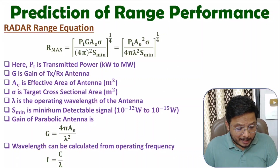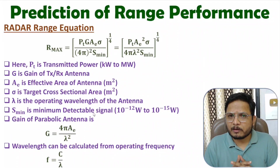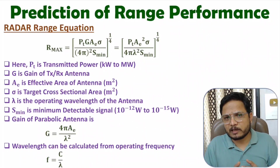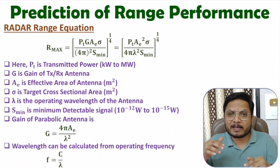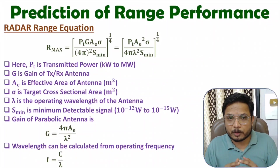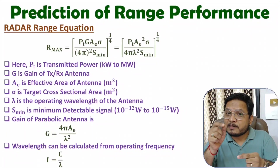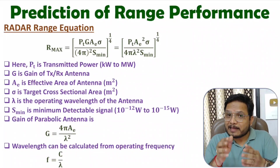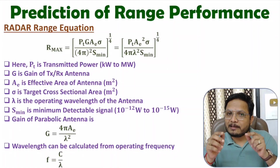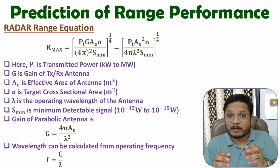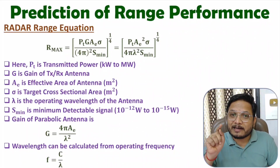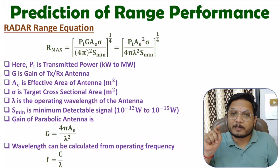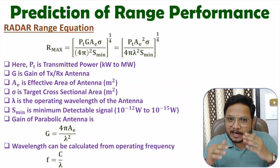Lambda is the operating wavelength and S_min is the minimum detectable signal. With a radar system, we receive a very weak echo signal — in the range of 10⁻¹² volts to 10⁻¹⁵ volts. That weak signal received by the antenna is given to the receiver circuit, which takes the decision of the range of the target.